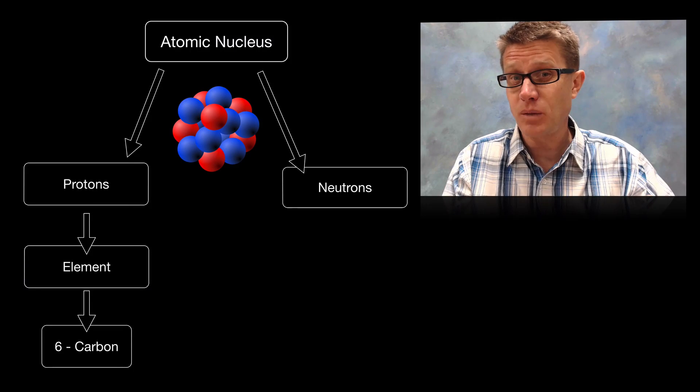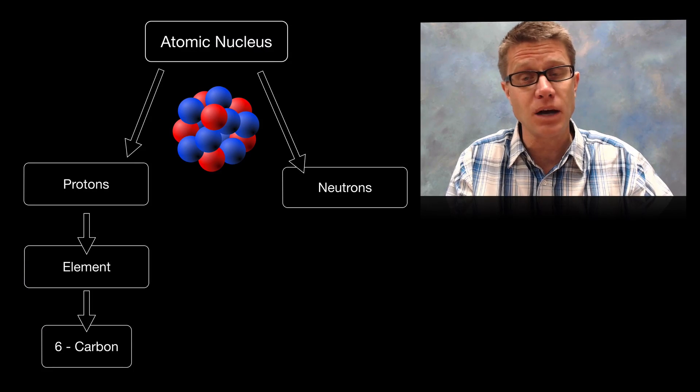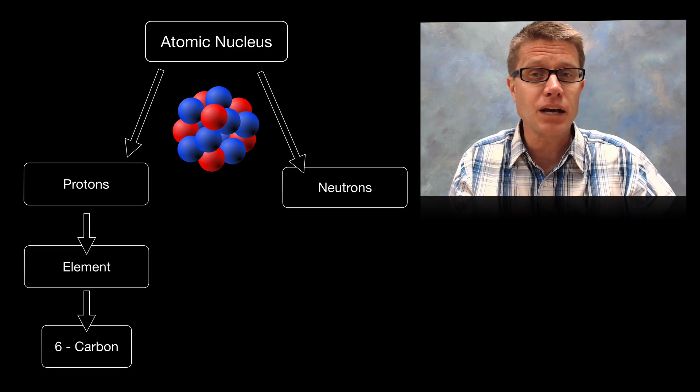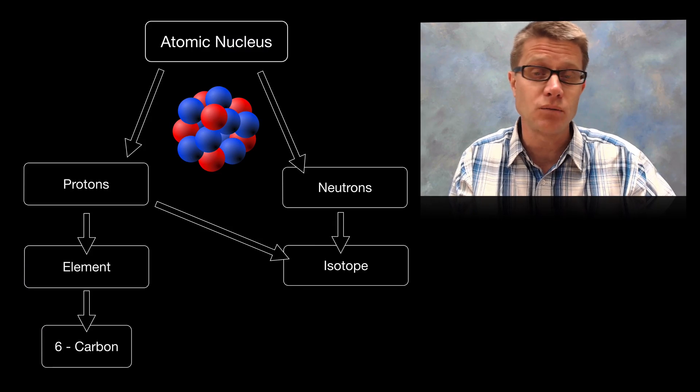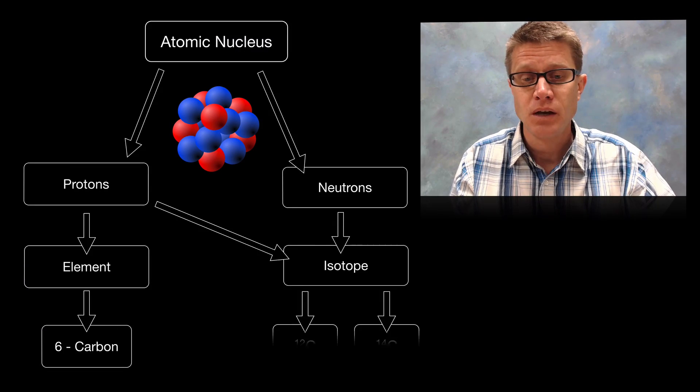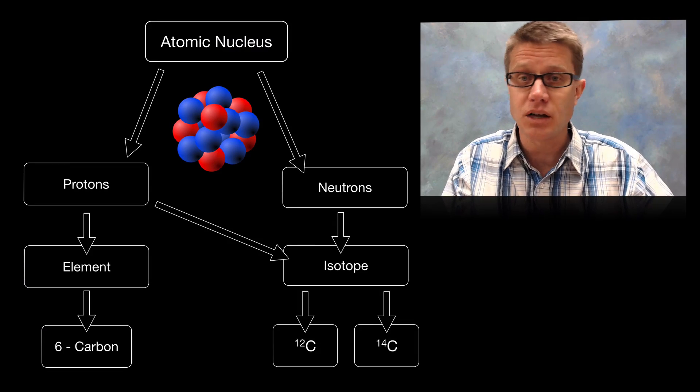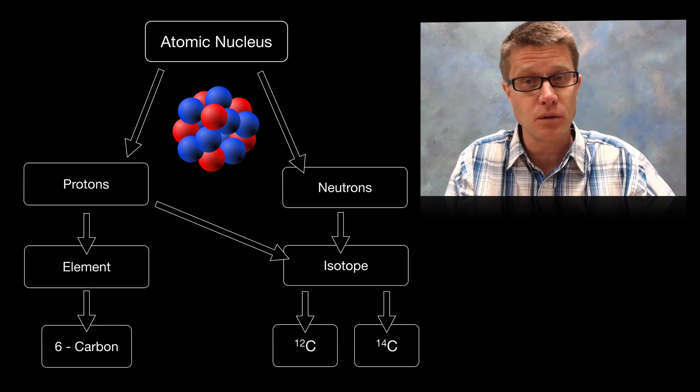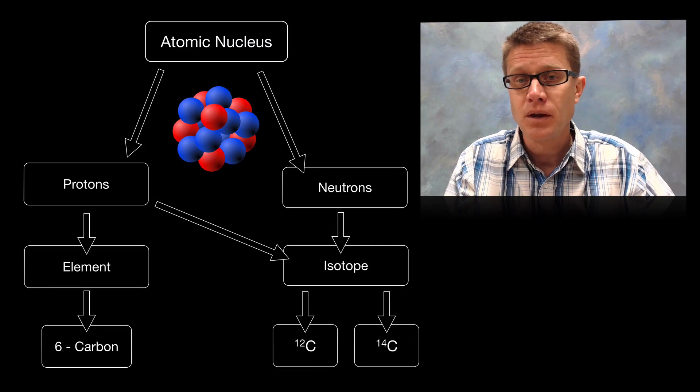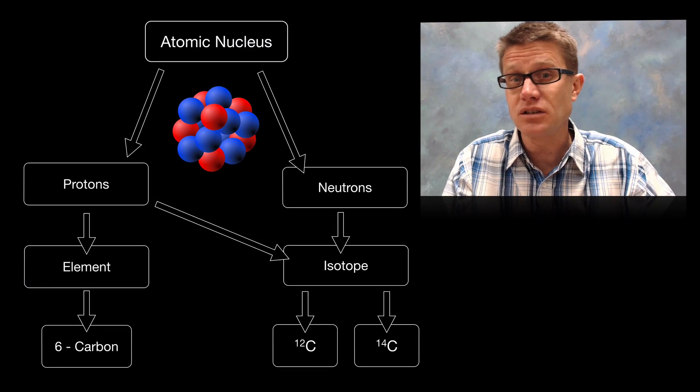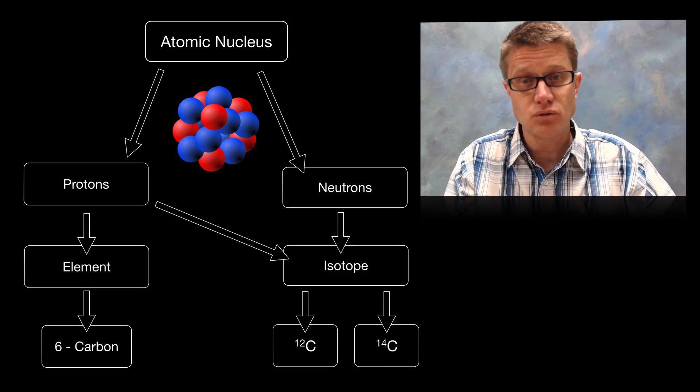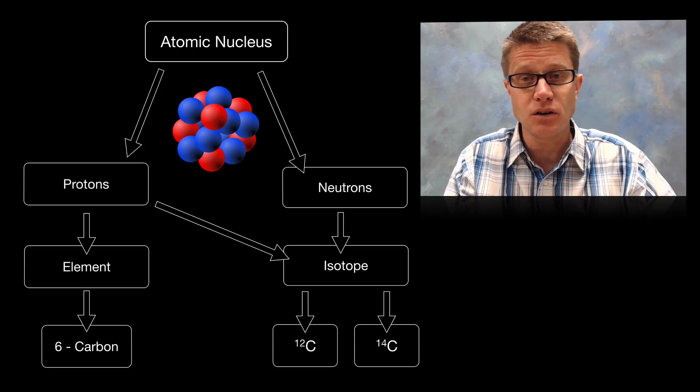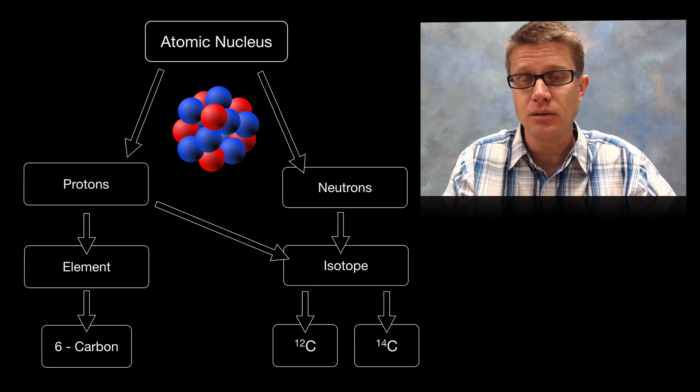Now you can have something that is the same element but varying amounts of neutrons. And so if we add up the number of protons and neutrons and they are different in a given element, we call those isotopes of that element. And so for example carbon 12 is going to have 6 protons. So is carbon 14 because they are both carbon. But carbon 12 is going to have 6 additional neutrons and carbon 14 is going to have 8 additional neutrons. And so we are going to have these different isotopes and we will find that for all of the different elements.